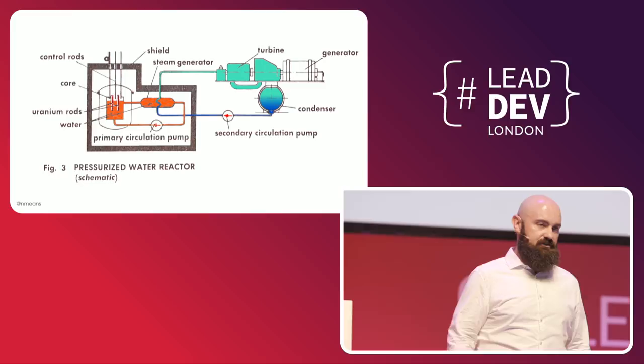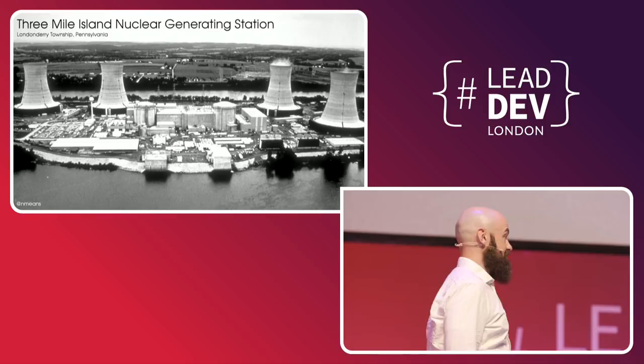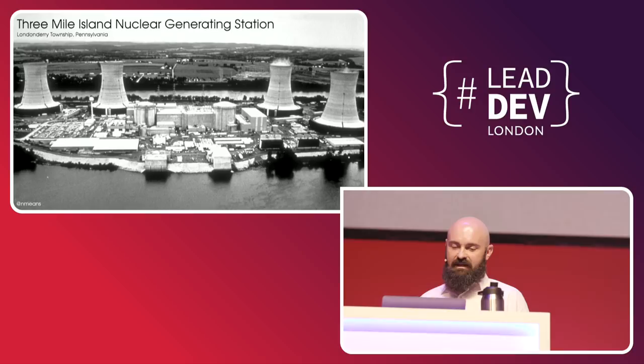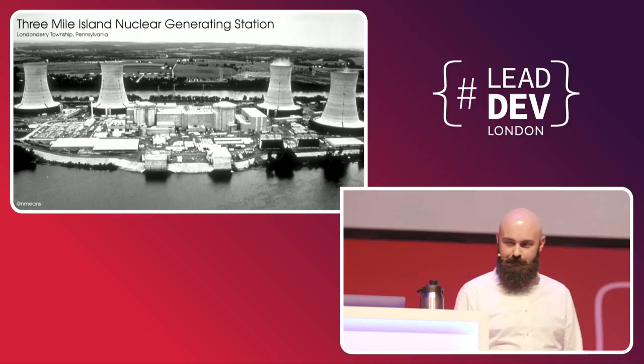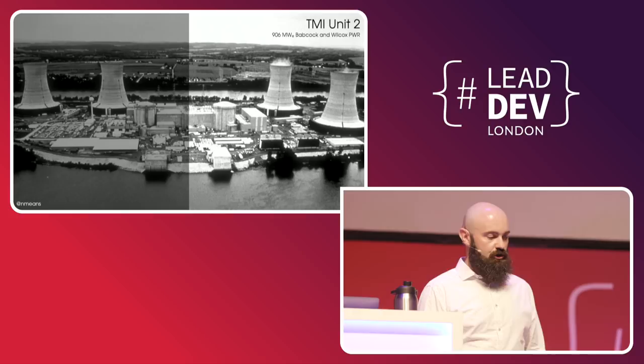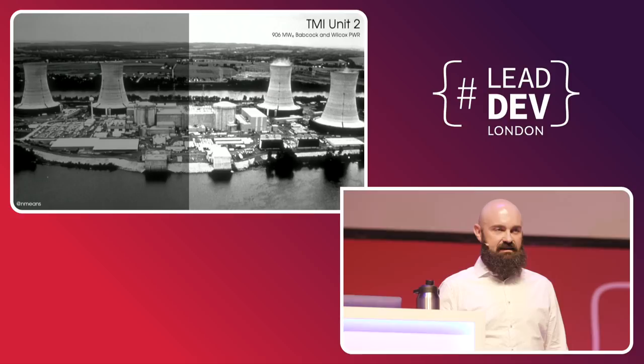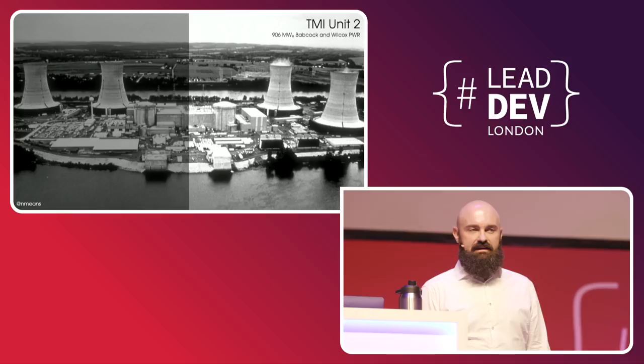Three Mile Island nuclear generating station is a two-unit nuclear power plant in Londonderry Township, Pennsylvania. It's built on a three-mile-long sandbar in the middle of the Susquehanna River, imaginatively named Three Mile Island, and it's about 10 miles south of the capital of Pennsylvania, Harrisburg. Unit 2 is a 906-megawatt electric pressurised water reactor designed by Babcock and Wilcox that went into commercial operation on December 30, 1978. Early in the morning of March 28, 1979, it's running at 97% capacity, and it has been for three months straight since it came online. As they say in the nuclear power industry, this reactor was running hot, straight, and normal. No significant issues.